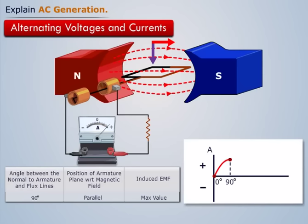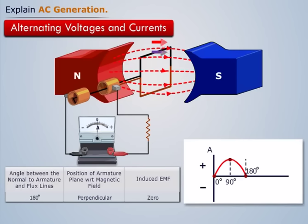As the armature continues to rotate clockwise, it cuts the flux lines at smaller and smaller angles and as a result, the induced voltage decreases from its peak value. Once the armature loop reaches 180 degrees in its rotation, eventually, again no flux lines are being cut and no EMF is induced in the conductor.